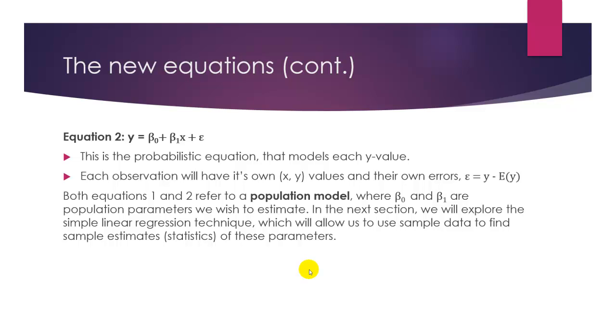If we want to discuss the individual y values, we need to model the probabilistic equation. So we would add an error term, epsilon, to the model, y equals beta naught plus beta 1x. Epsilon, the error, is just the difference between the actual y values and the average y value for a given value of x.